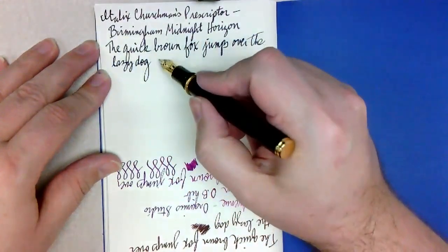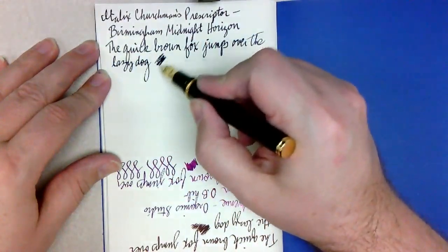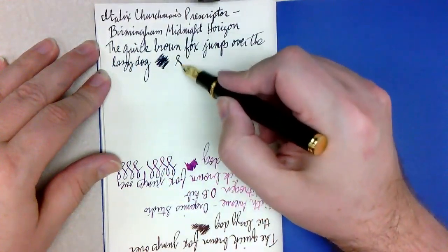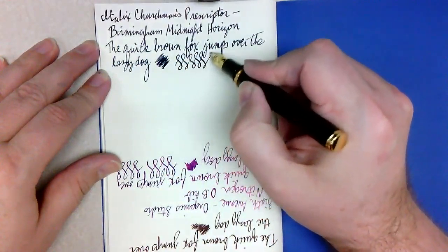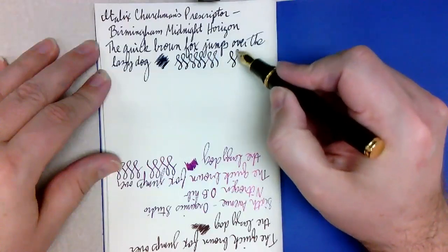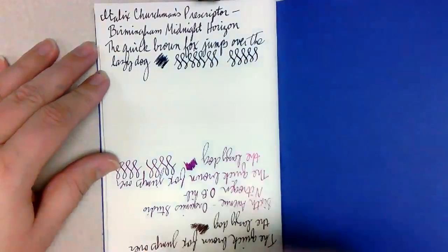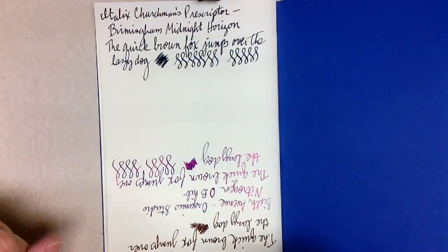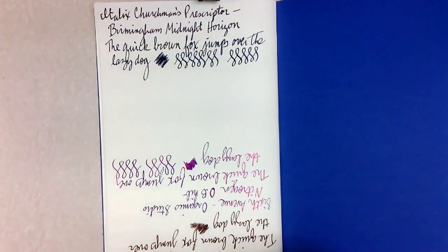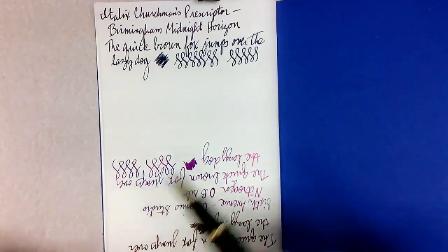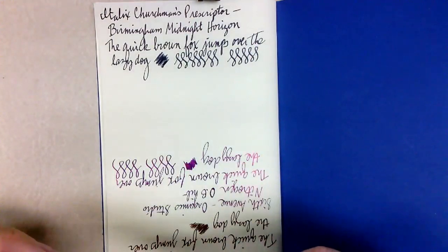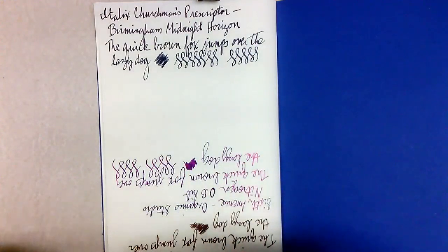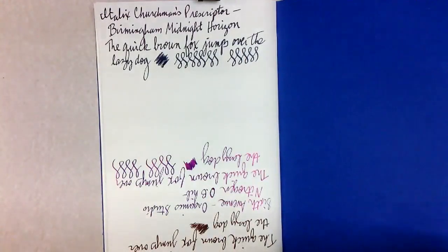And again, it gives you that nice line variation you expect from any kind of italic stub or whatever. So, I have to admit, looking at it on the camera here, that does seem a little bit bluer than everything looks like. To me in person, this is at best a pigeon gray. It does look a bit more blue on the camera.